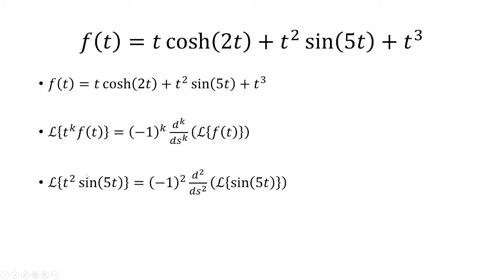When looking at t squared sine of 5t, k equals 2, so we have negative 1 to the second power. Now we have to take the second derivative of the Laplace transform of sine of 5t. The Laplace transform of sine of 5t is a over s squared plus a squared, where a is 5. So that's 5 over s squared plus 25.